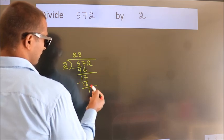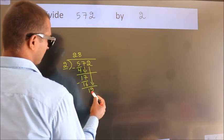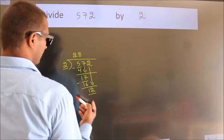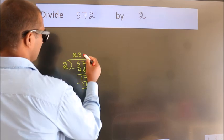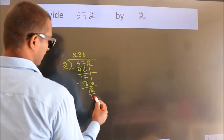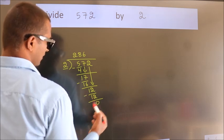After this, bring down the beside number. So 2 down, so 12. When do we get 12? In 2 table, 2 6, 12. Now we subtract. We get 0.